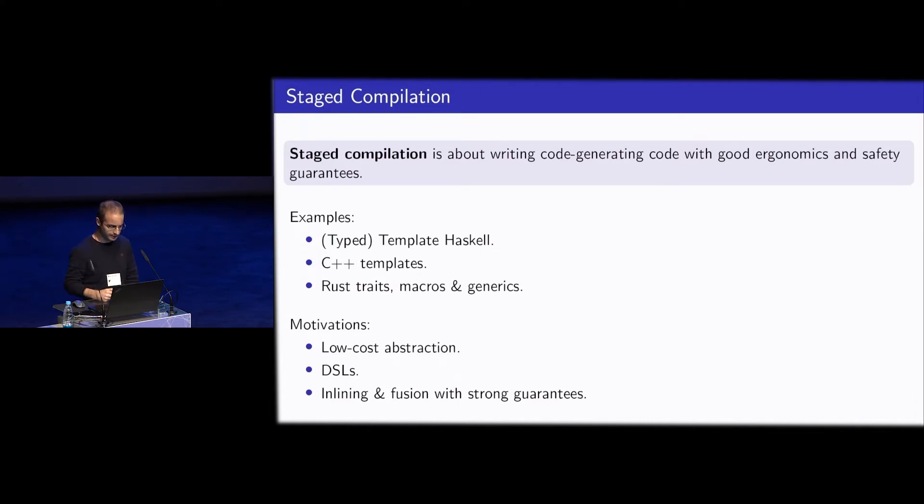And also there's inlining and fusion with strong guarantees. This is more a personal motivation for me, because I have worked a lot at writing high performance Haskell code. And it's a bit frustrating there that we have quite a fragile infrastructure for inlining and for fusion optimizations. If we use staged compilation, it's much more natural to develop infrastructure where we really have strong formal guarantees, for example the fusion always happens and goes through.